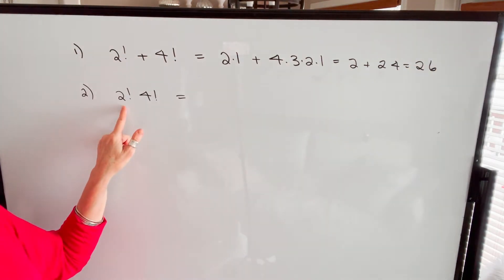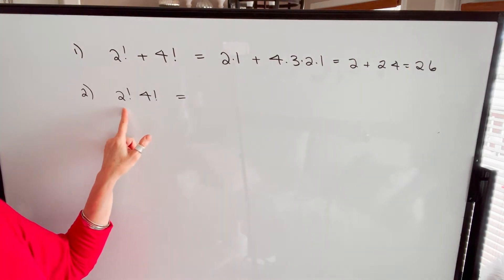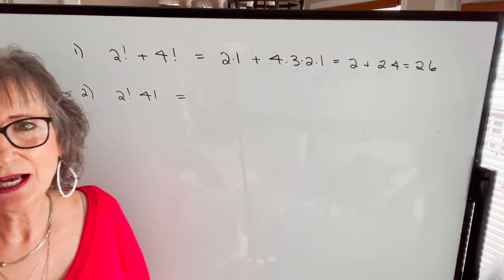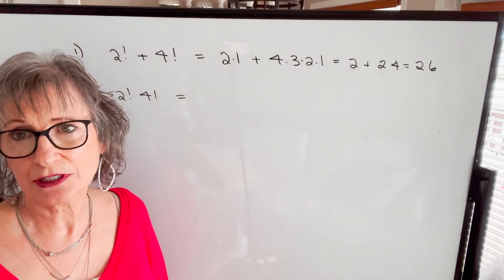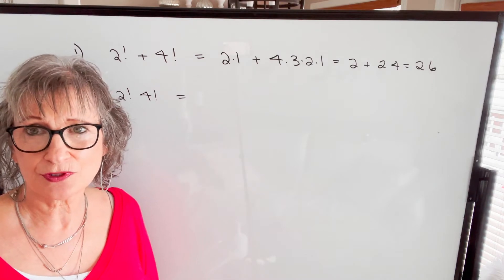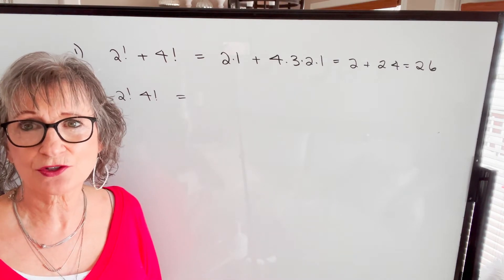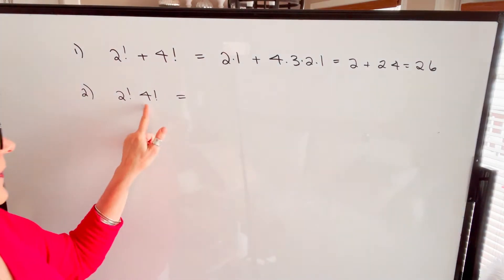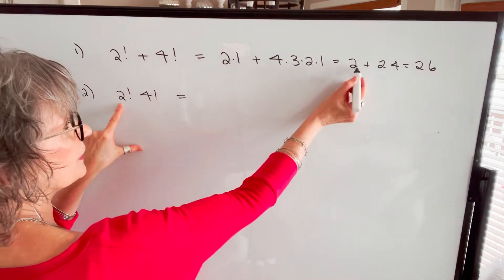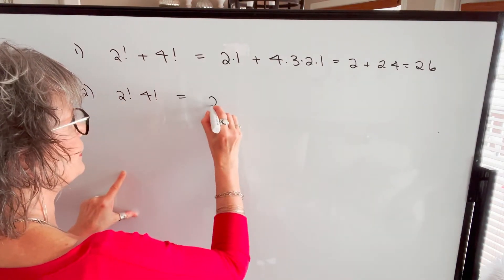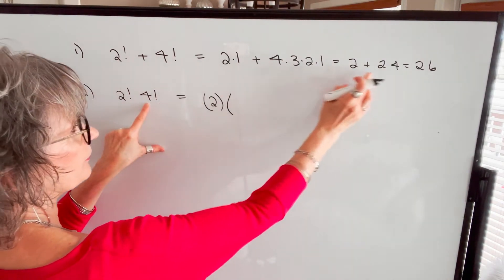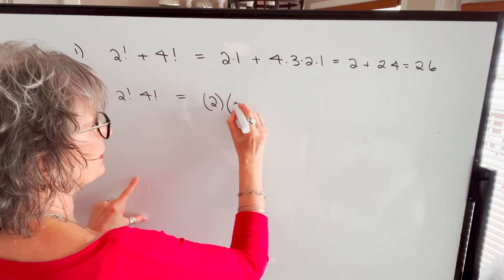If you're asked to multiply factorials — for example, 2 factorial times 4 factorial — again, there are not any shortcuts you can use. You have to calculate each of those factorials and then multiply. So 2 factorial, we already know, is 2. And 4 factorial, we've calculated, is 24.